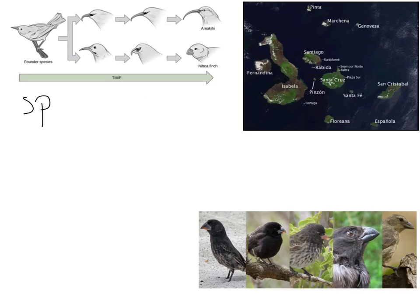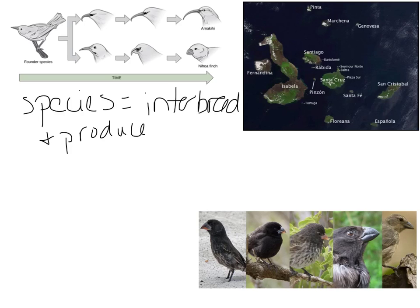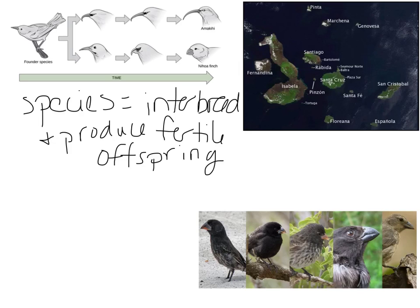Let's get some vocabulary down. A species is organisms that can interbreed and produce viable, fertile offspring — not just offspring that can survive, but they need to be able to have babies as well. For example, a horse and a donkey can interbreed and produce a child — they can produce a mule. However, that mule is infertile; it cannot have children. So that keeps the horse and the donkey as two separate species, because they are unable to interbreed and produce fertile offspring.